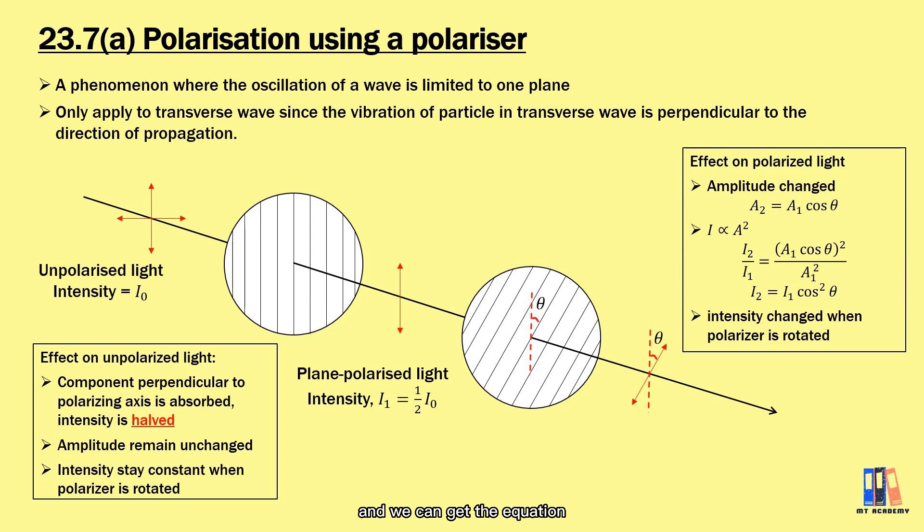We can apply the ratio and get the equation of I₂ equal to I₁ cos² θ, which is also Malus's law. Based on the equation, the intensity of light depends on the angle of rotation. So it will not be constant like the previous case when we apply the polarizer on unpolarized light.